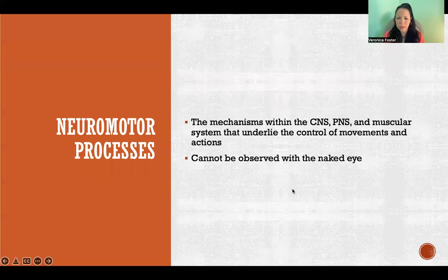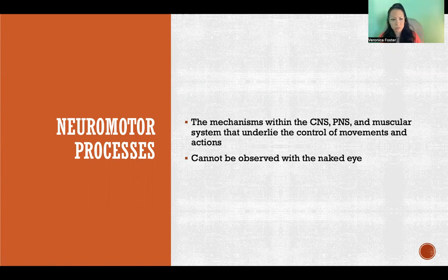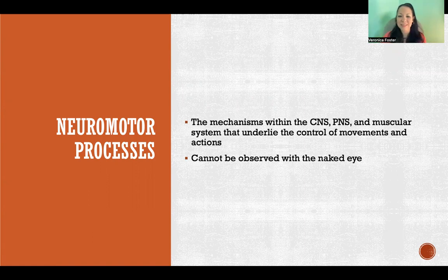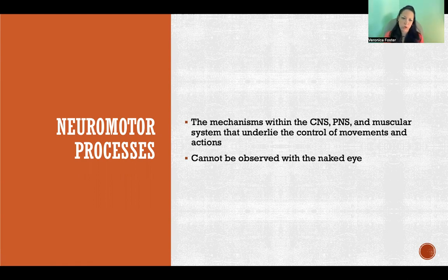Neuromotor processes refer to what we can't see — the control mechanisms happening internally that contribute to movement. They're different from actions and movements, which are things we can observe with the naked eye. Neuromotor processes are invisible; we can't look at a person from the outside and see them. We observe them using other types of methodology and technology. These are the mechanisms within the central nervous system, peripheral nervous system, and muscular system that underlie the control of movements and actions.